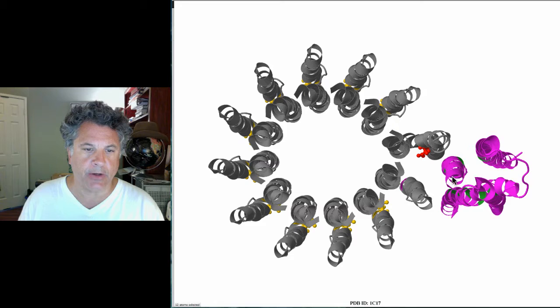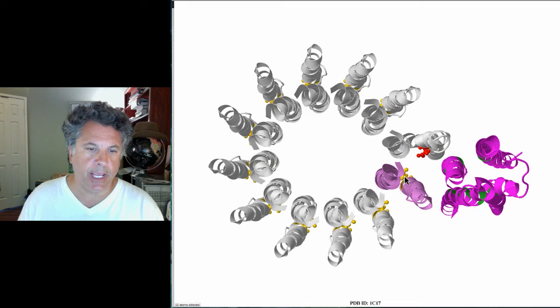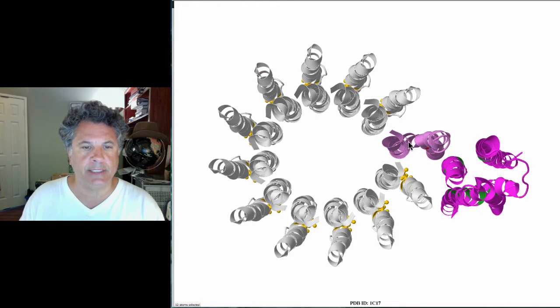They protonate one of the aspartate 61's on this particular C subunit. That C subunit carries the proton around as the rotor spins until it achieves this position, and at that point deprotonation occurs with the concomitant twisting of these helices, which drives the rotation of the ring.